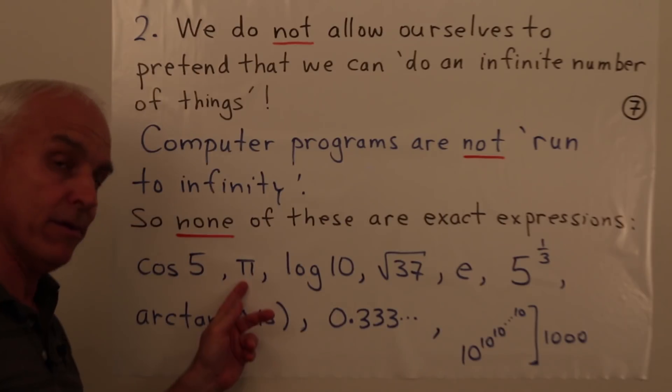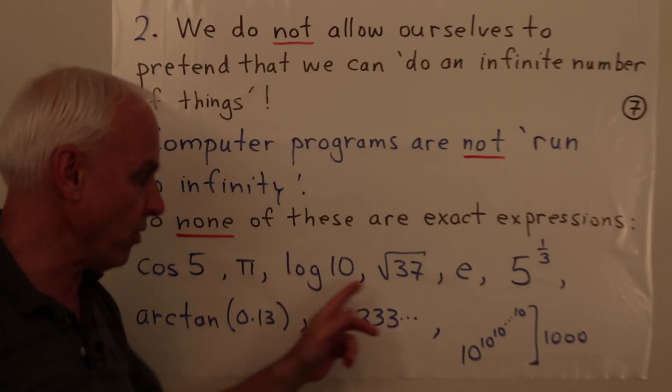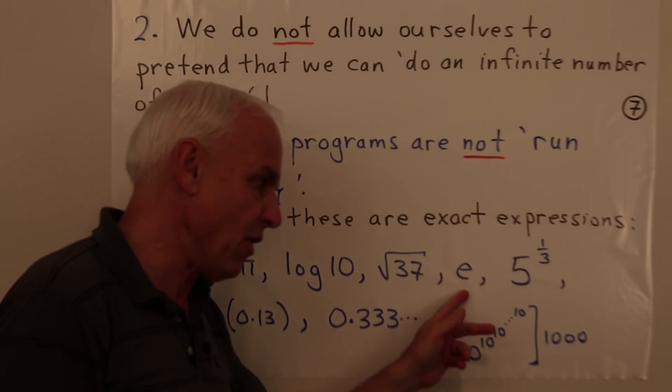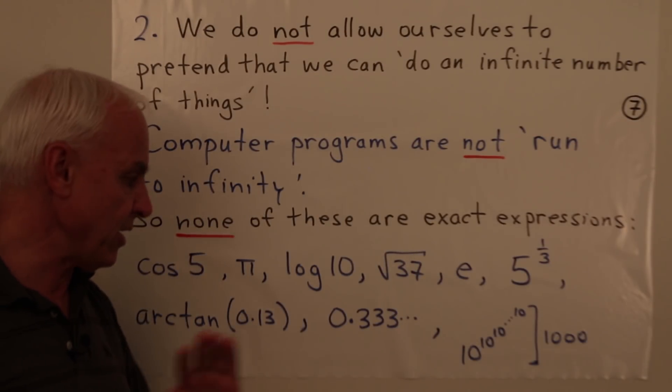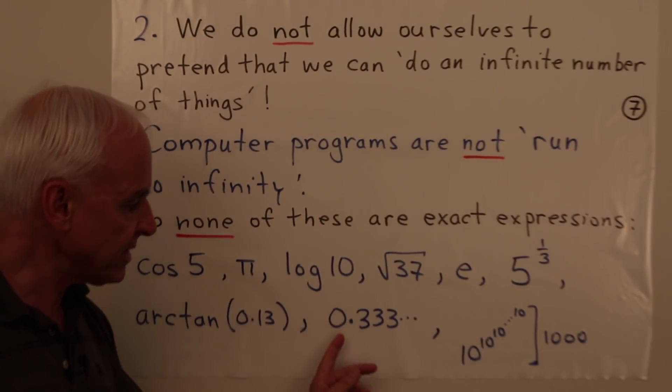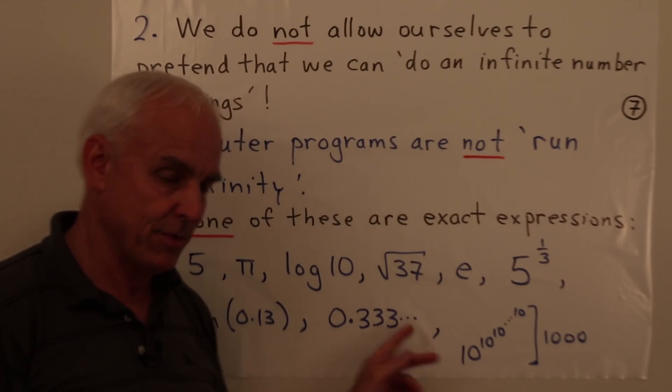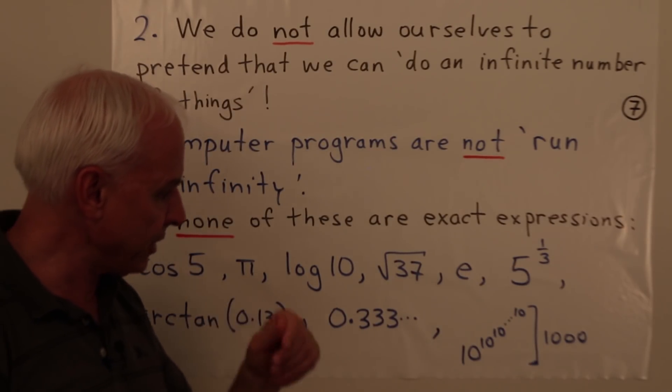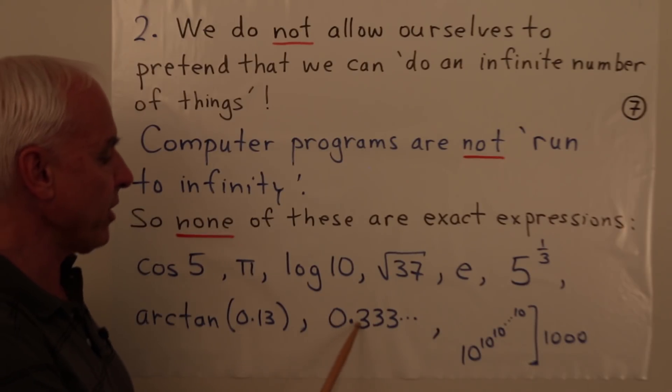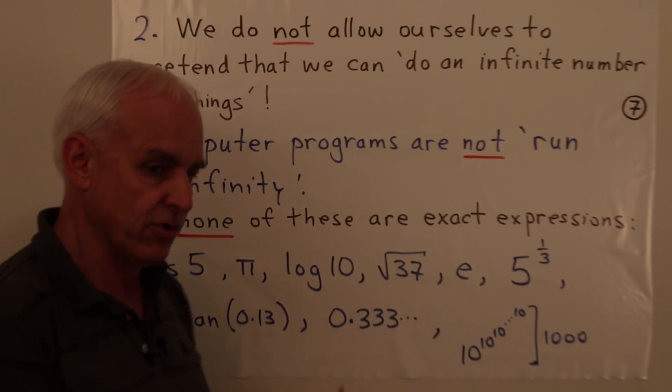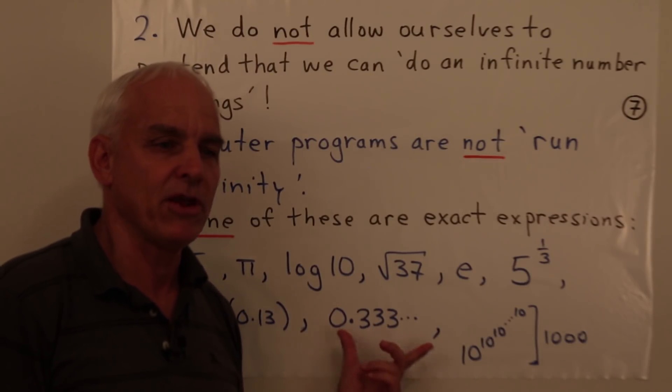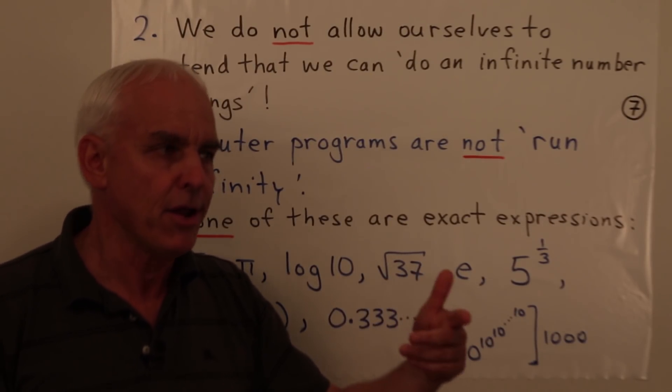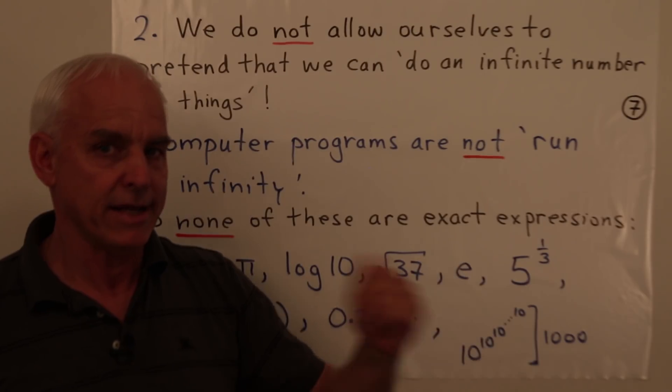In that sense these kinds of things may have some approximate meaning, but as for exact meanings no, we're not going to allow it. Pi, sorry, log 10, no. Square root of 37, no. e, no. Five to the third, no. Arc tan of 0.13, no. Even something like this which is seemingly not so problematic, 0.3333 etc.